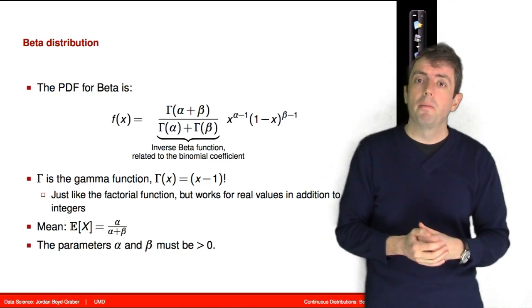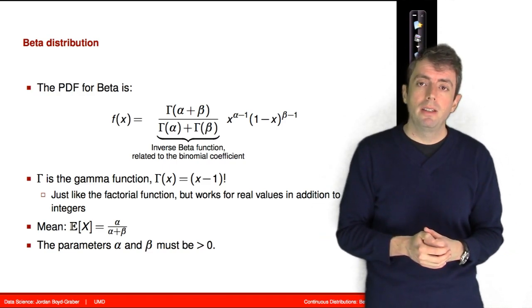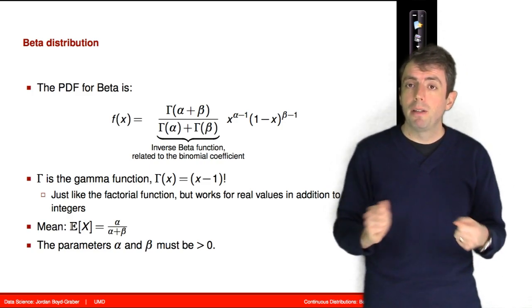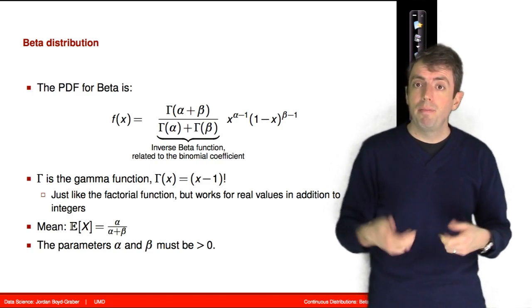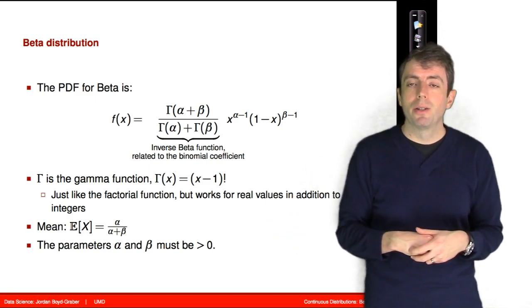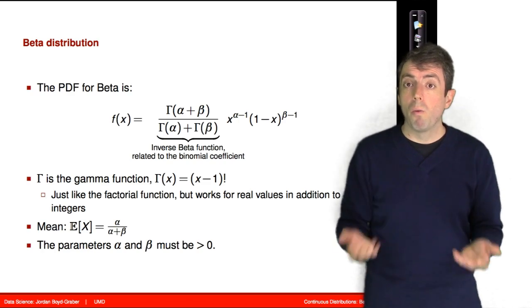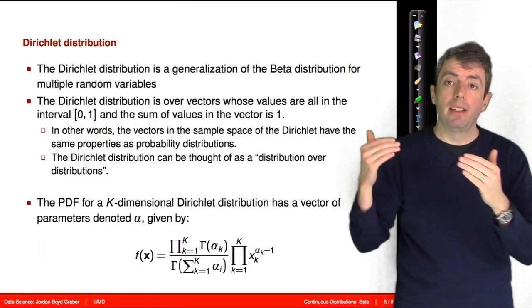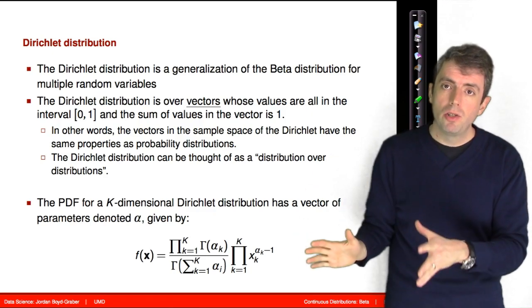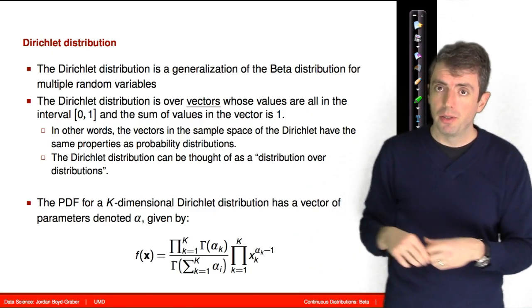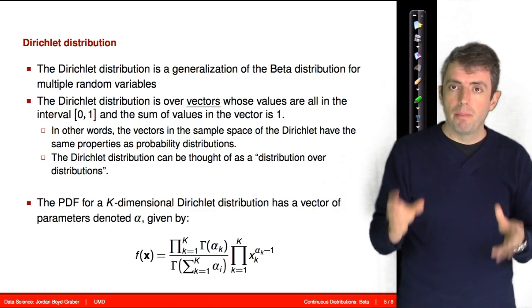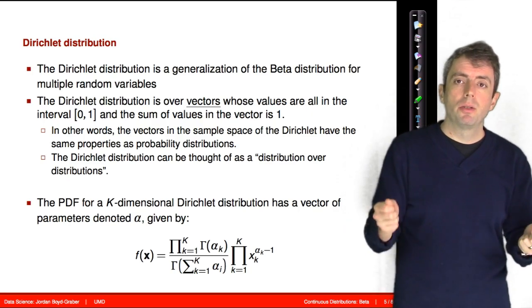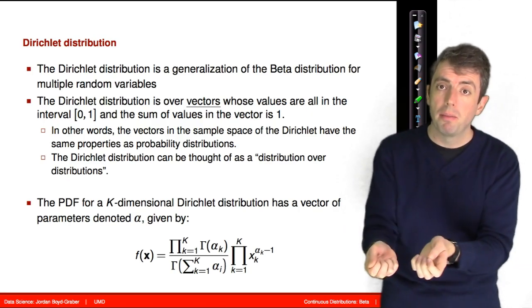The expected value of a beta distribution is simply alpha over alpha plus beta. So if alpha and beta are the same, the expected value is going to be one half. Just as we generalize the Bernoulli distribution, we can generalize the beta distribution, which can be thought of as a distribution over things that could be probabilities.